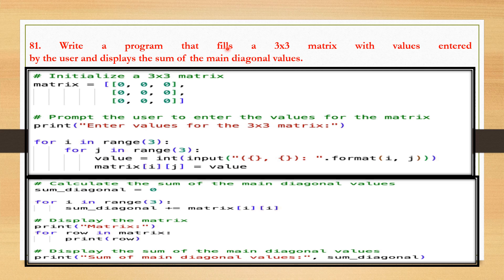The first program creates a 3x3 matrix filled with values entered by the user and displays the sum of the main diagonal elements. The program first initializes the 3x3 matrix with all elements set to 0, then prompts the user to enter values using a nested for loop, iterating over each position and assigning the entered value. After filling the matrix, it initializes sum_diagonal to 0, then uses a single for loop to iterate over main diagonal elements — positions where the row index equals the column index — adds each element to sum_diagonal, and finally displays the result.